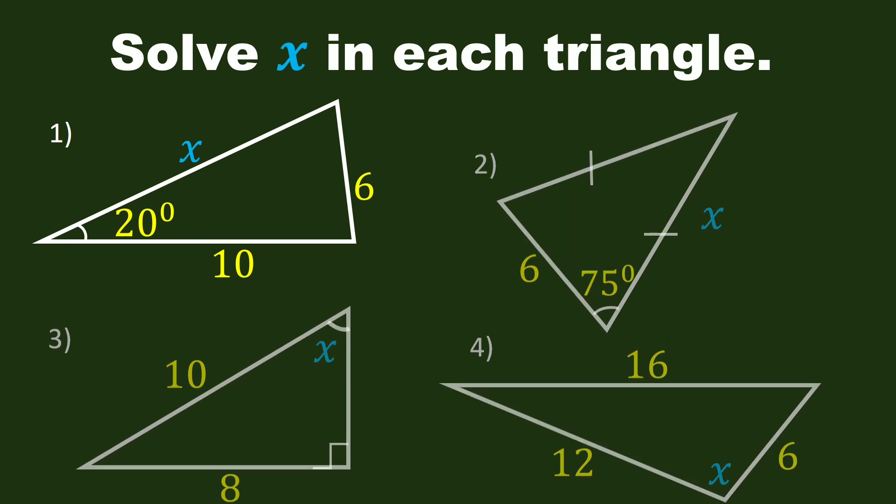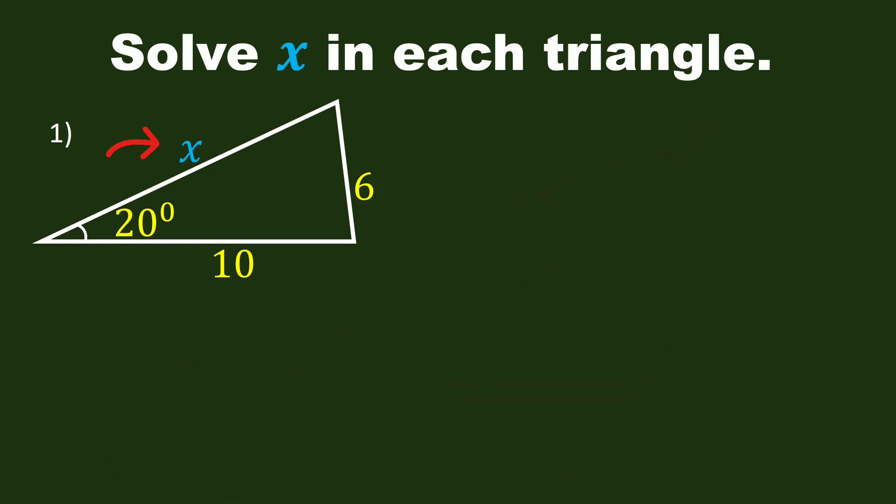Let us solve X in the first triangle. The given parts are 6, 10, and 20 degrees. Before we can solve X, we need to find the second angle that is opposite to 10, and we call it Y.